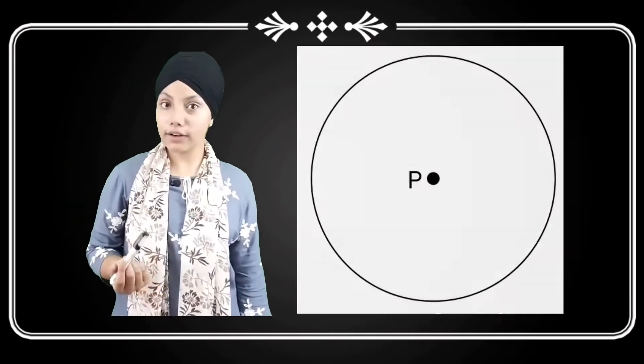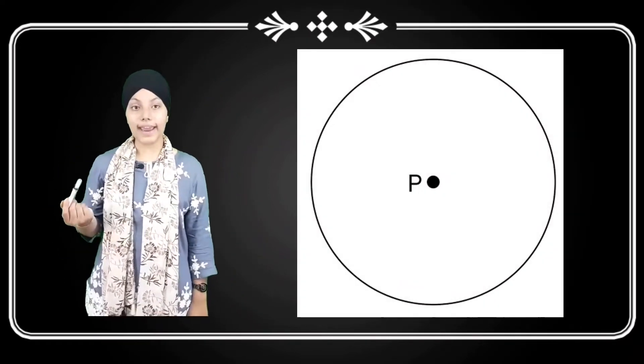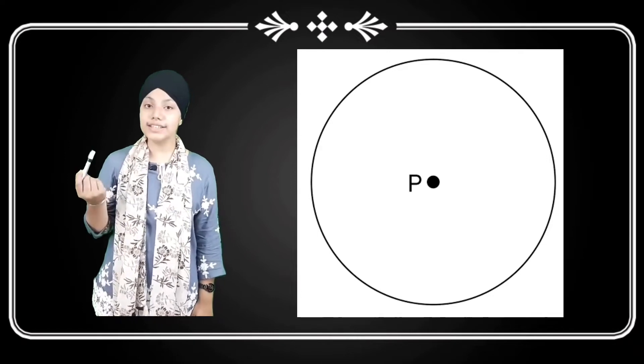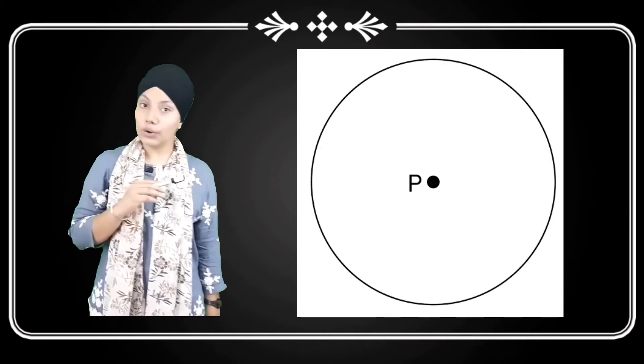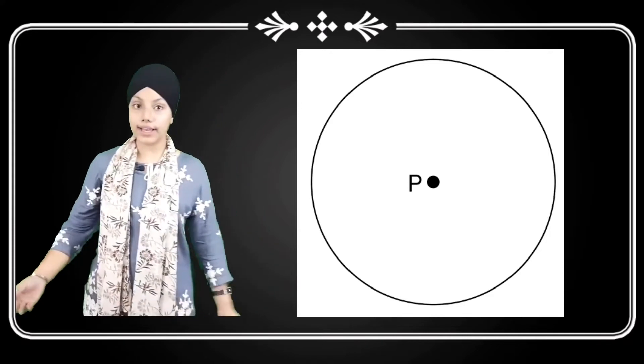Now, we have a second figure. Second figure is point. Point indicates a position in a surface. It has no length, no breadth, or no thickness.